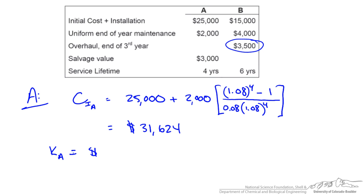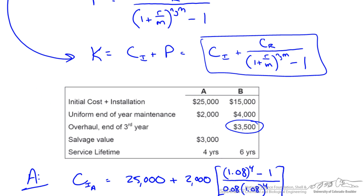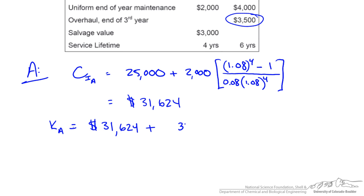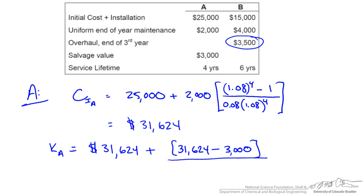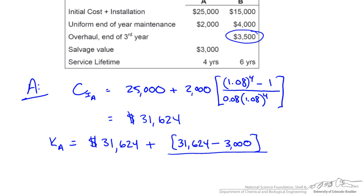Now our capitalized cost is $31,624 for our initial cost plus the replacement cost. CR is $31,624 minus our salvage value, divided by 1.08 to the exponent of 4 for four years, then subtract 1. This results in a capitalized cost for reactor A of roughly $111,000.